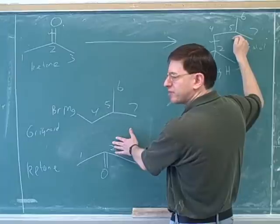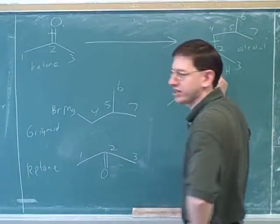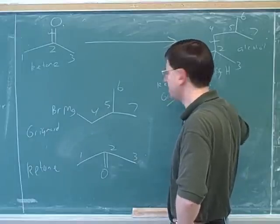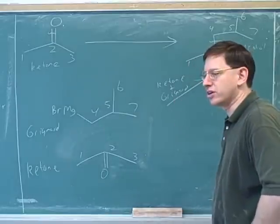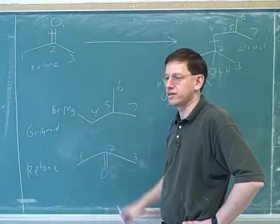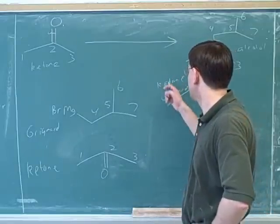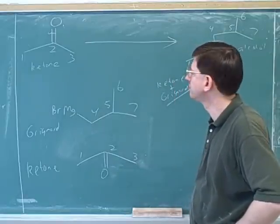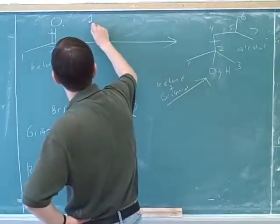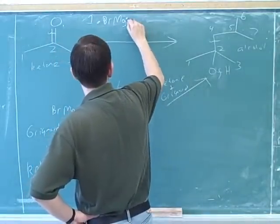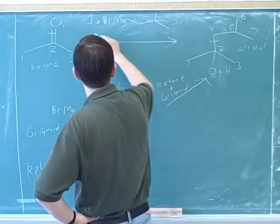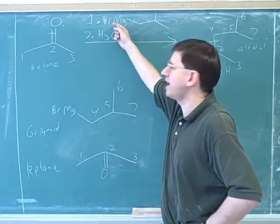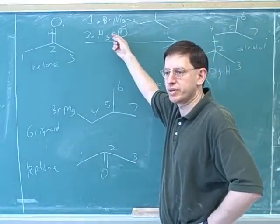It helps to ask: what reaction takes us here? Well, we know the reaction that's going to take us here is ketone plus Grignard. So we should draw one of the fragments as a ketone and the other fragment as a Grignard. It definitely helps to actually say in words what the functional groups are that we have to start with in order to get to this product. Our final answer is that this is a two-step synthesis: first, you would add this Grignard, and then we do the aqueous workup, H3O plus, which gives us the protonation.